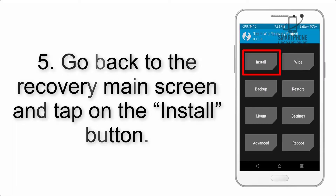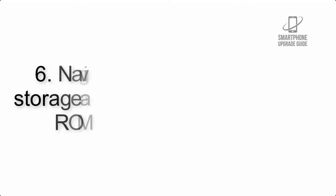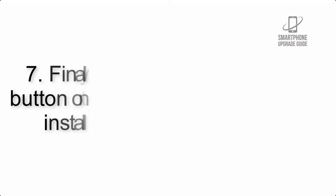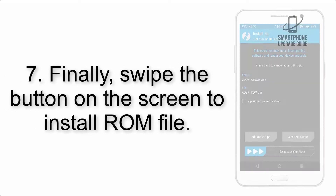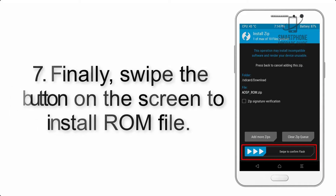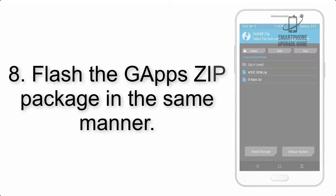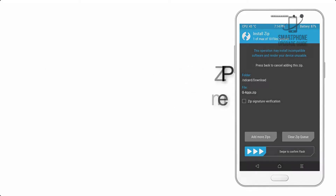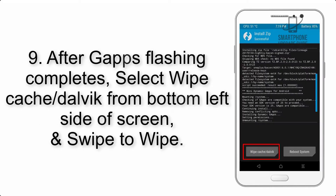Step 5: Go back to the recovery main screen and tap on the Install button. Step 6: Navigate to the storage and select the ROM zip file. Step 7: Finally, swipe the button on the screen to install the ROM file. Step 8: Flash the GApps zip package in the same manner.